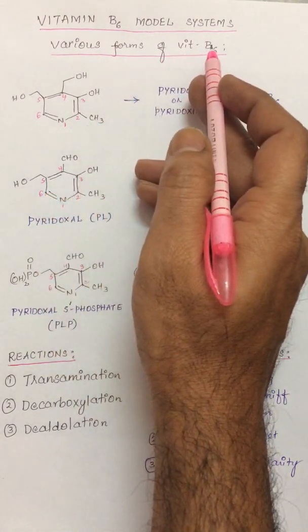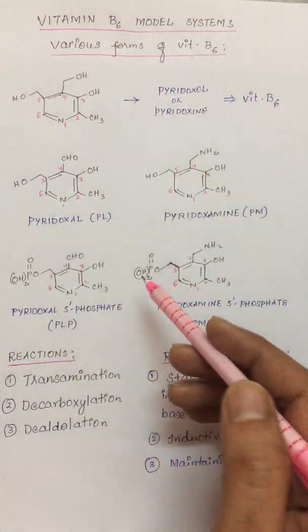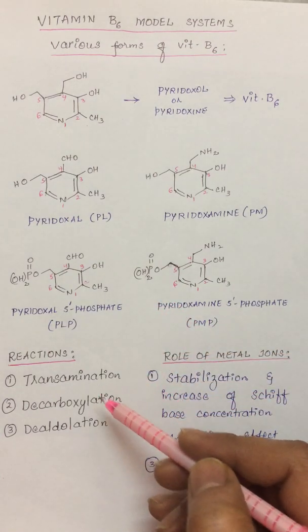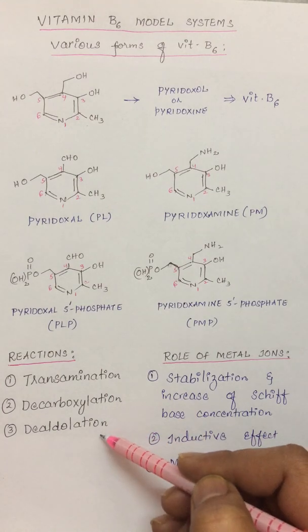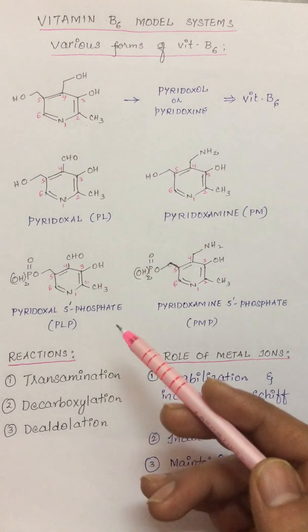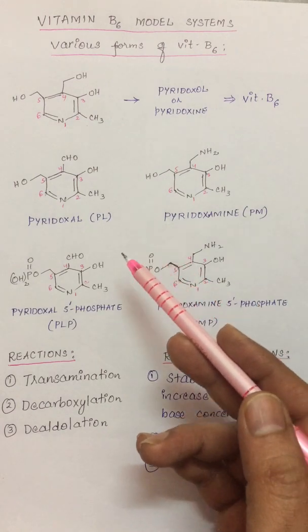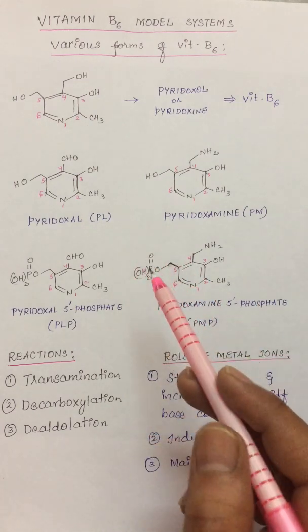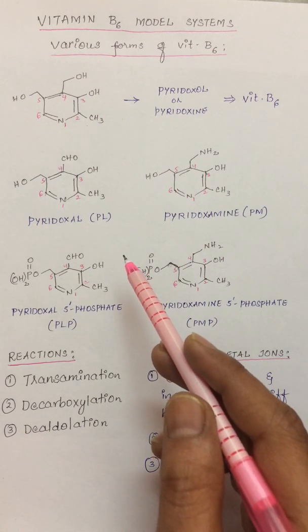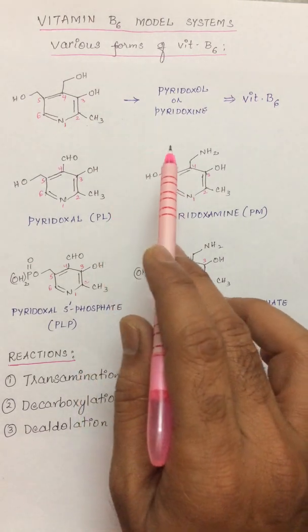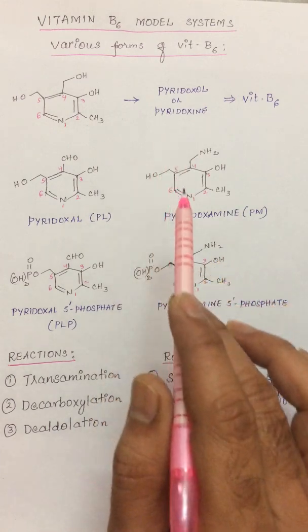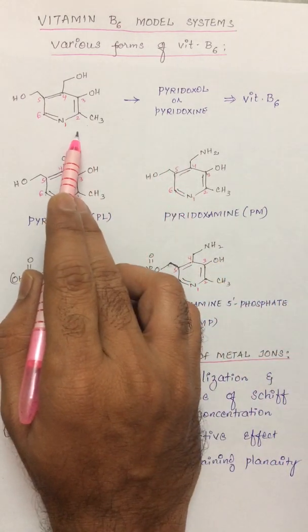Vitamin B6 model systems involve certain important biochemical reactions such as transamination, decarboxylation, and dealdolation. These reactions occur in the presence of various forms of vitamin B6 in living systems. Even enzymes are involved, but for our topic we have to study only the model systems, so this is not the biochemical part of it.